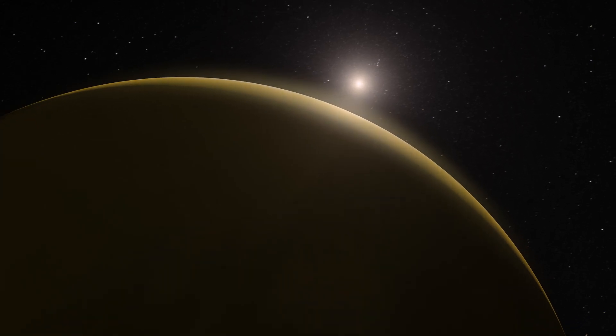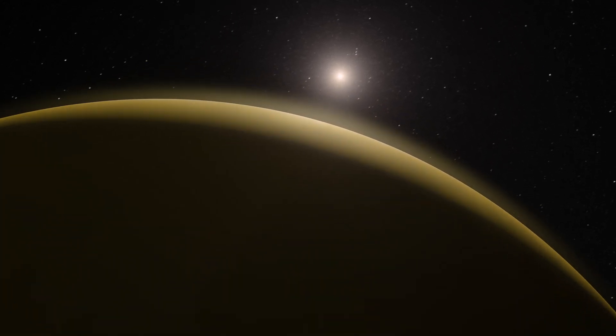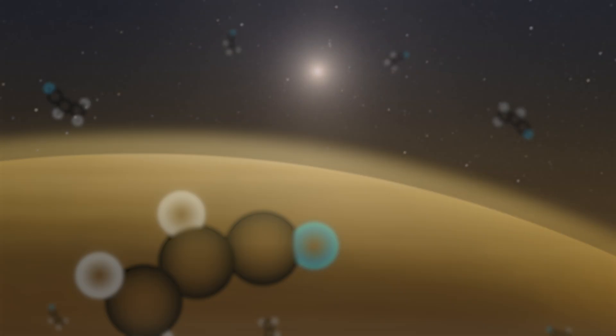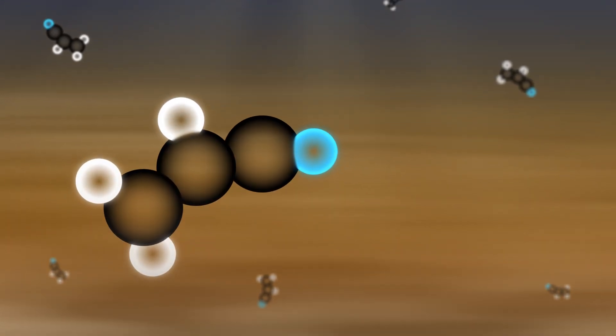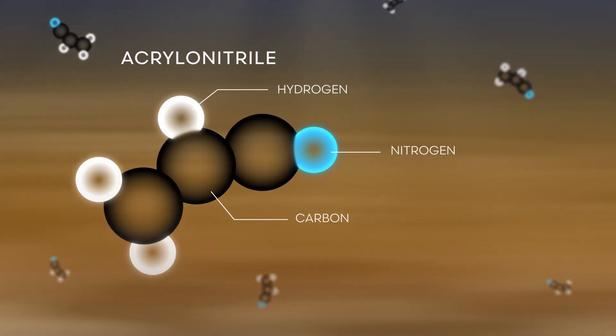So with its abundant organics and its oily lakes, could exotic lifeforms be brewing on Titan? Well, in 2017, NASA scientists discovered that this moon's atmosphere contains acrylonitrile, an organic molecule that is attracted to both water and oil.